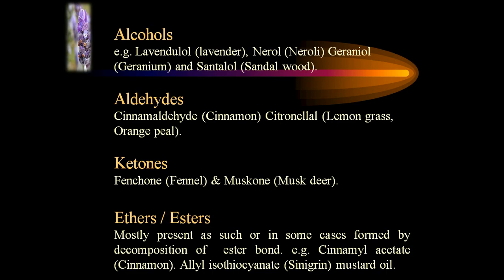In the category of ethers and esters, these are mostly present in a form after decomposition of esters, such as cinnamal, cinnamyl acetate, and allyl isothiocyanate, formed after the hydrolysis of the parent compounds.